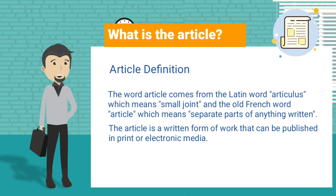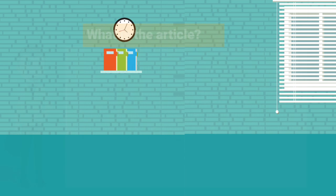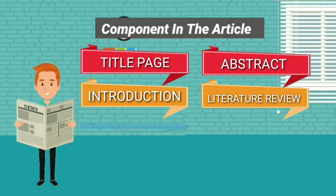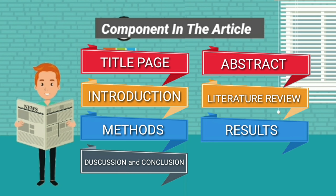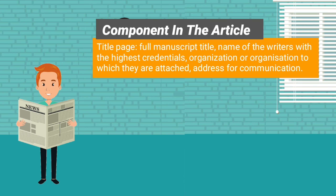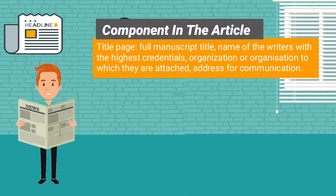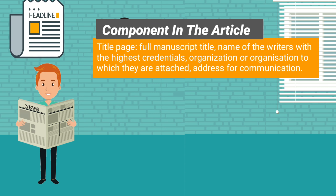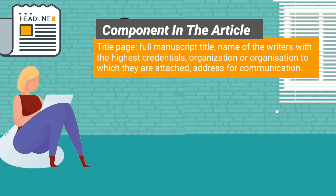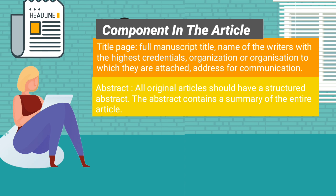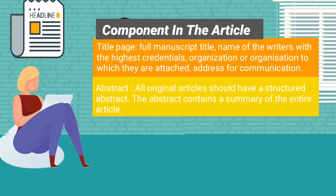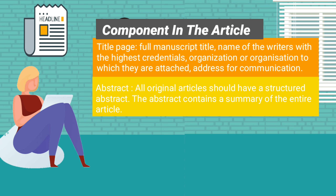The components of an article include: the title page, which contains the full manuscript title and the name of the writers with their highest credentials, and the organization to which they are attached, along with an address for communication.